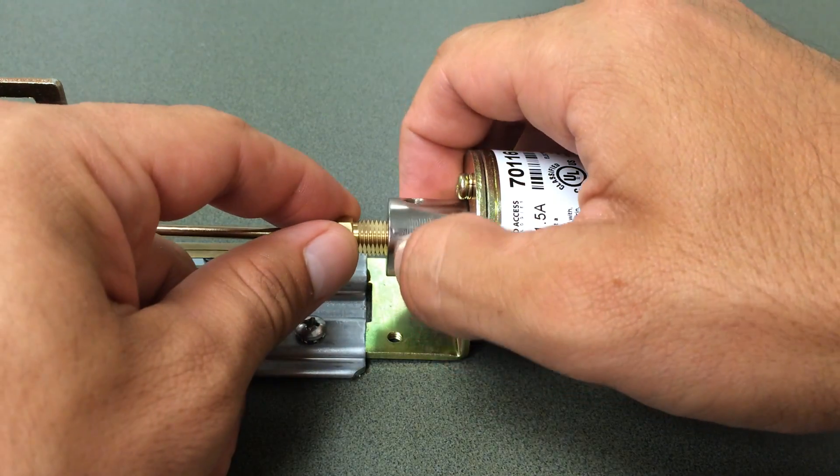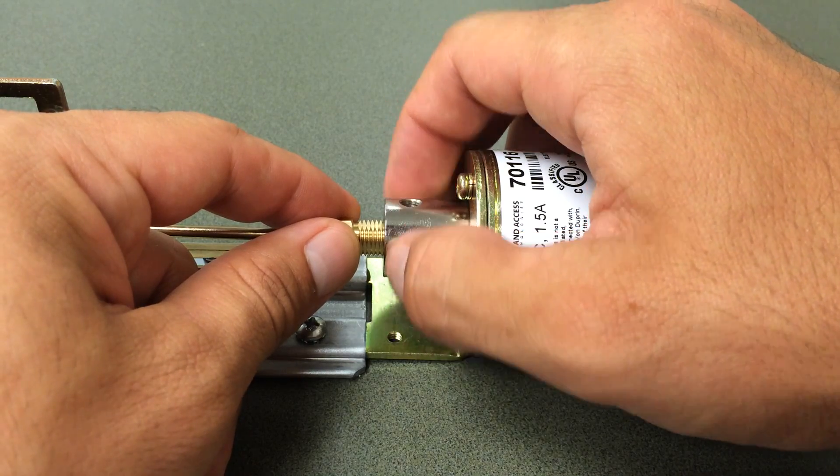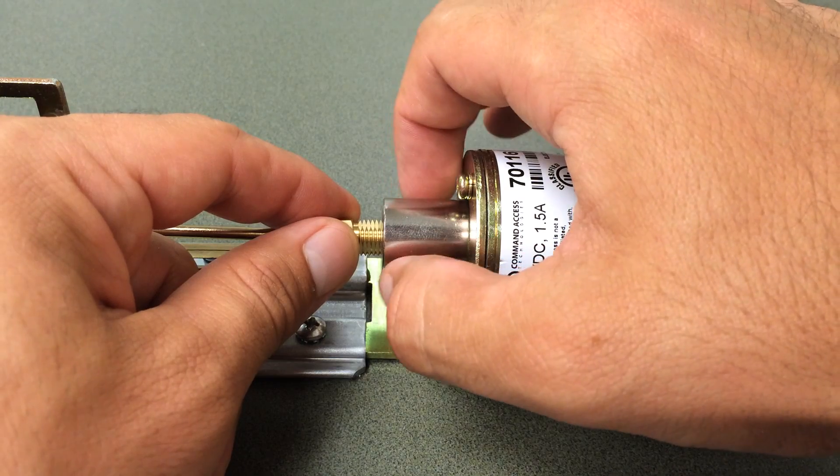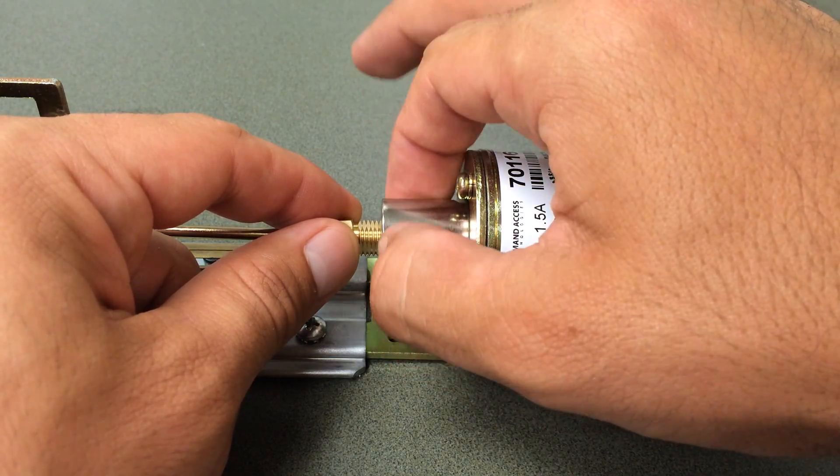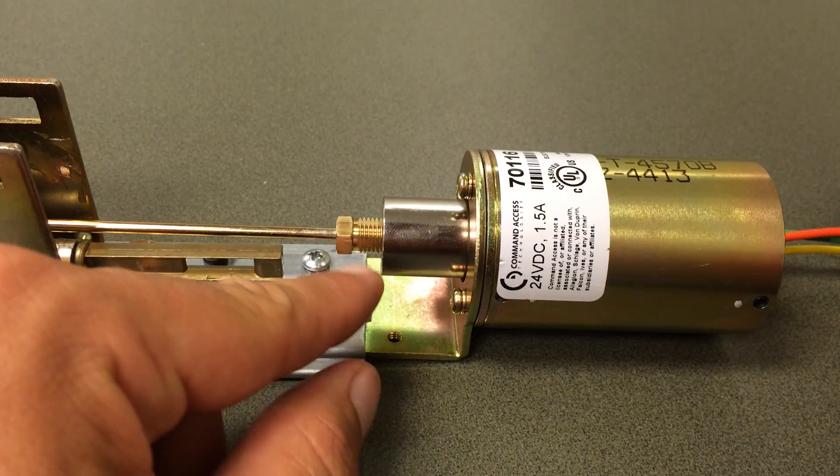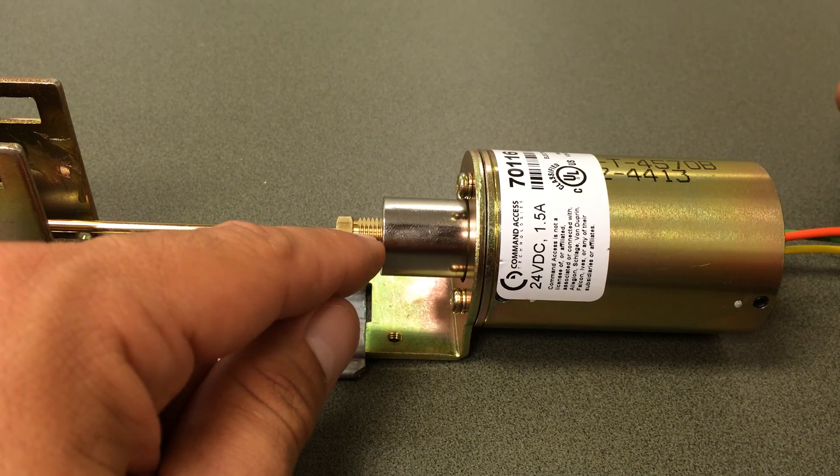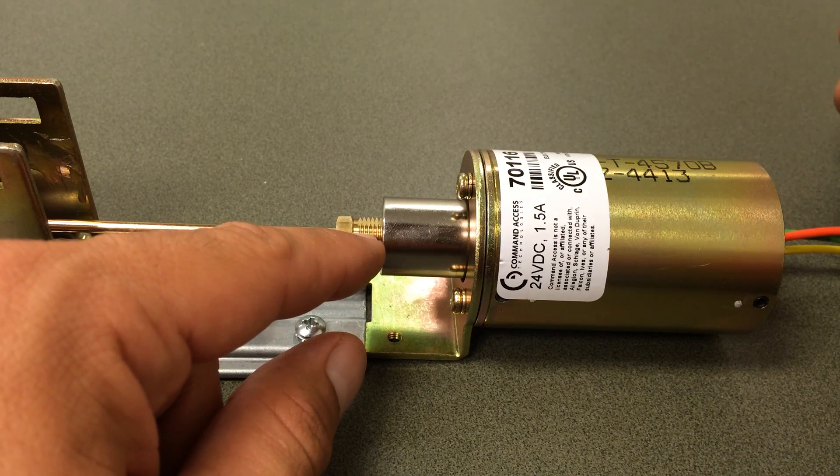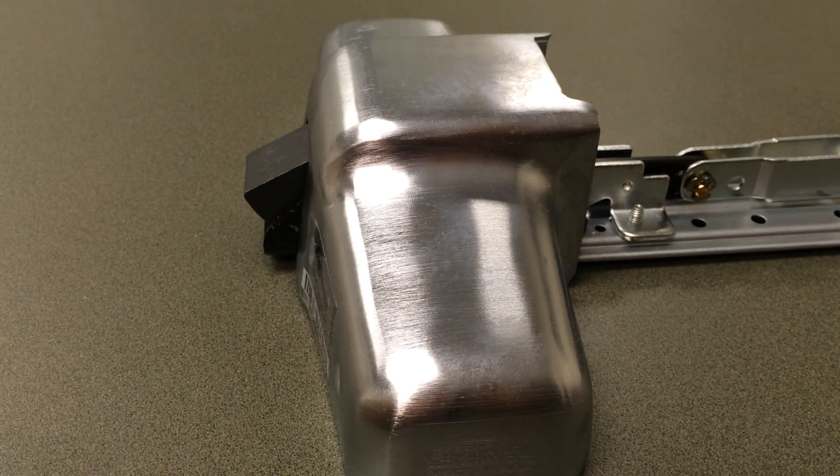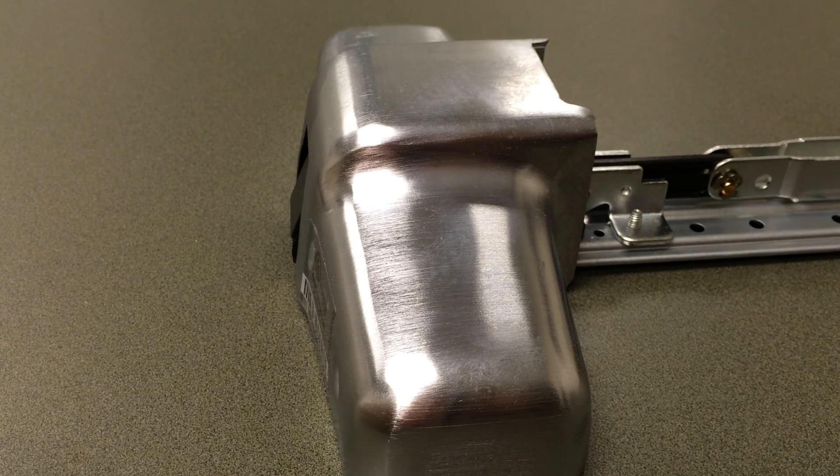We can adjust it by just unscrewing the plunger or screwing it and eating up more threads. Here I'm going to eat a few more threads. What we typically recommend is you would want to have somewhere around six to ten threads showing before you reach the plunger. That's usually the correct adjustment we found. It can vary from device to device. It looks like we're retracting now right to where we want it.